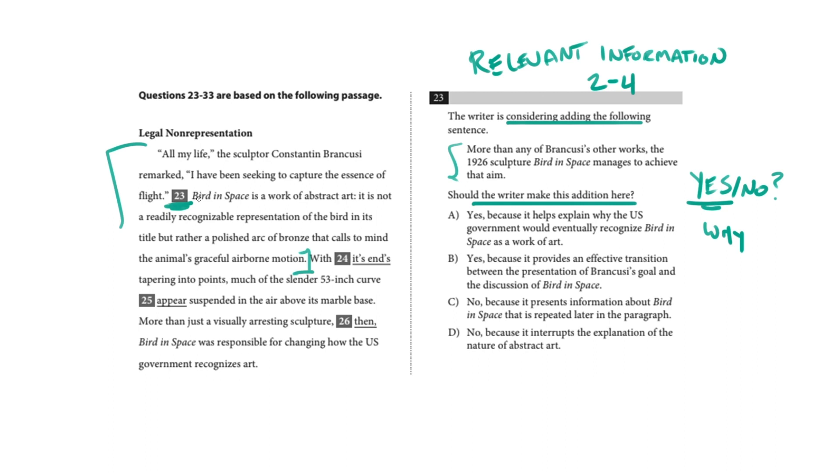Because for a relevant information question, we're really only looking at the immediate context of where the addition goes. We're not thinking about the paragraph as a whole. We're thinking about, okay, in this spot between sentence one and sentence two, we want to put this sentence 1.5. Does it fit there or not?